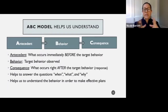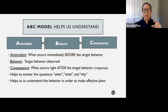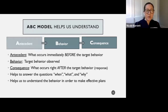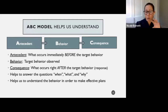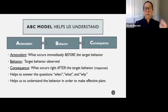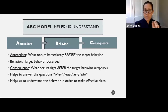The idea that these behaviors are learned is really better understood when we look at something called the ABC model. The A stands for antecedent — what occurs immediately before the target behavior. The environment sets up the likelihood that behavior will occur, and the antecedent is included in that. Then we look at the behavior, which is the target behavior observed — it must be very descriptive and observable.